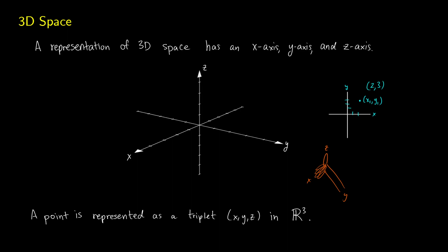So let's say we have a point. We usually use dotted lines to help us see where the point is. If we went 3 in the x direction, 2 in the y direction — that would meet up about here — and then say 4 in the z direction, we would have the point (3, 2, 4).